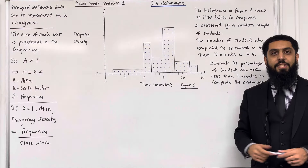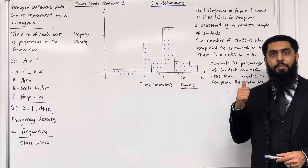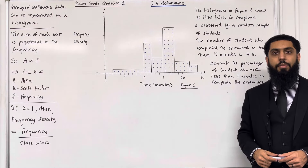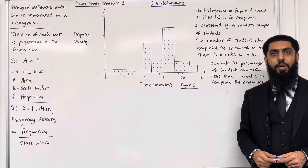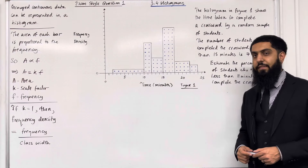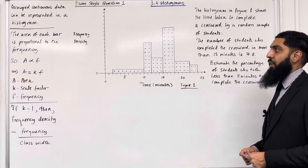Welcome back. In this teaching video I'll be covering 3.4 Histograms. 3.4 represents Chapter 3, Section 4 of the Pearson A-Level Maths Year 1 textbook. Let's go through the key facts of this section.